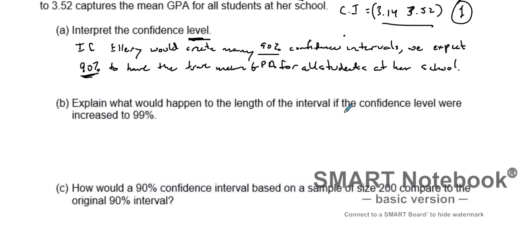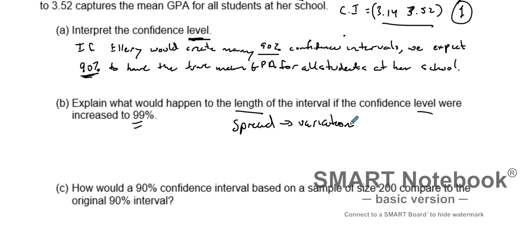Now, what would happen to the length of the interval if the confidence level were increased to 99%? When we talk about length, that's talking about spread. Spread leads to variation, and that is talking about margin of error. So when we talk about length, we're basically asking: how is the margin of error changing?